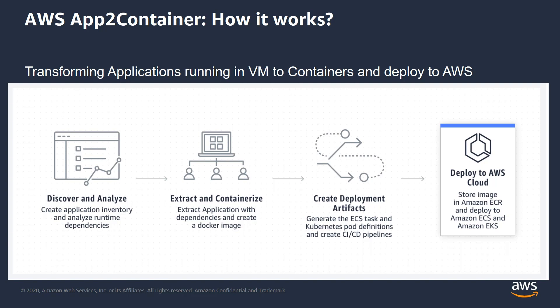You simply select the application you want to containerize, App2Container packages the application artifact and identifies dependencies into container images, and configures the network ports. It also generates the ECS task and Kubernetes pod definitions.